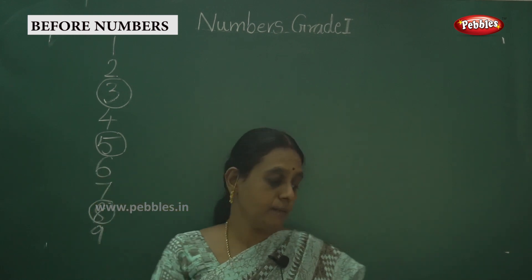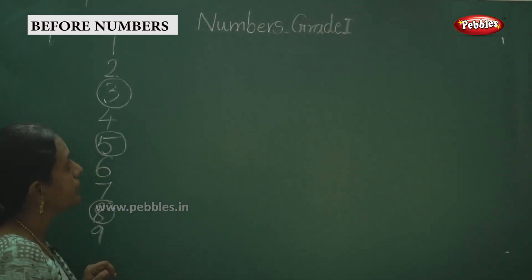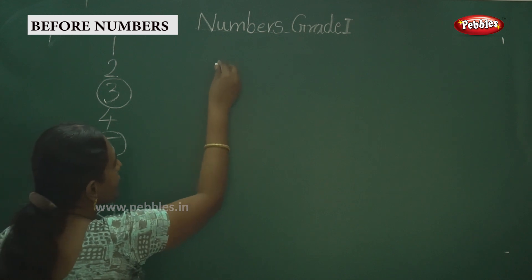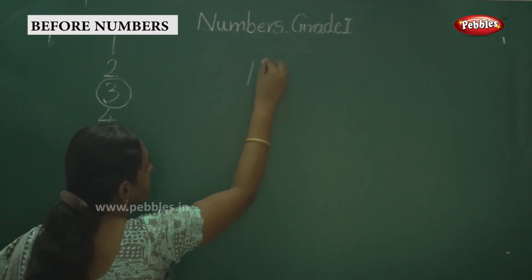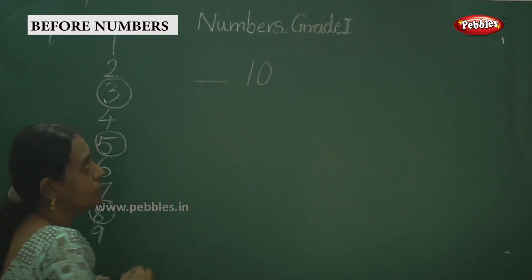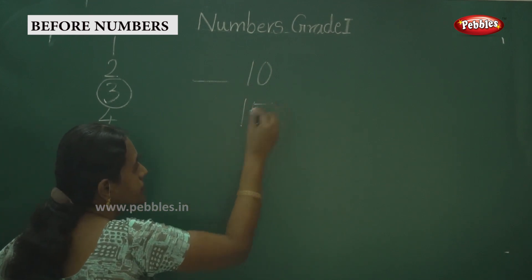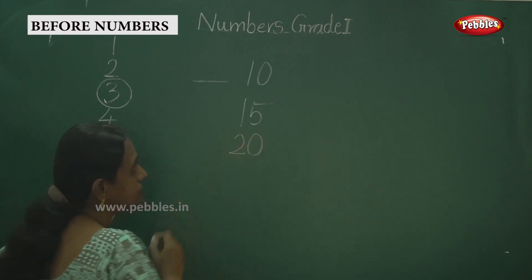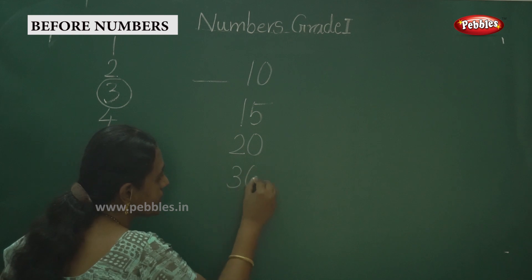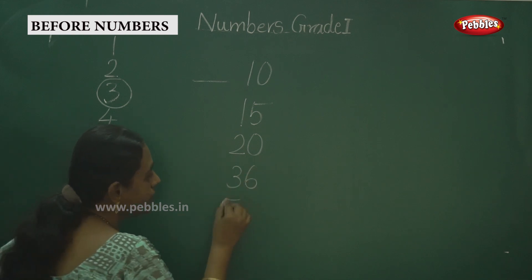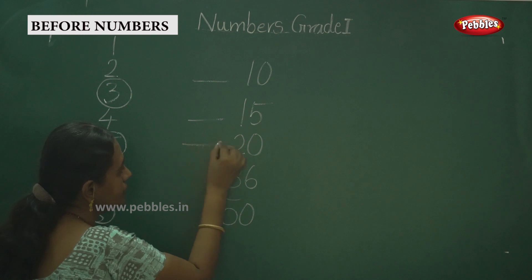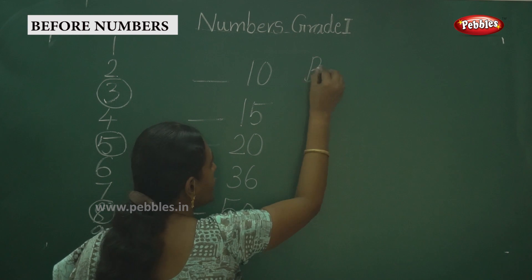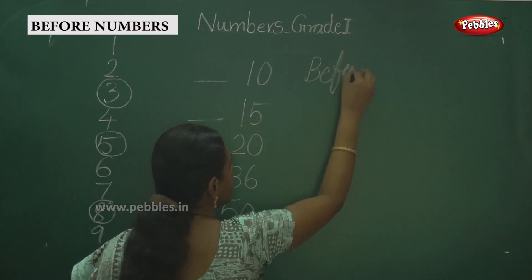We have to discuss some more numbers here. That is 10, and 15, and 20, and 36, and 50. Here we have to write the number — what is before each of these numbers?